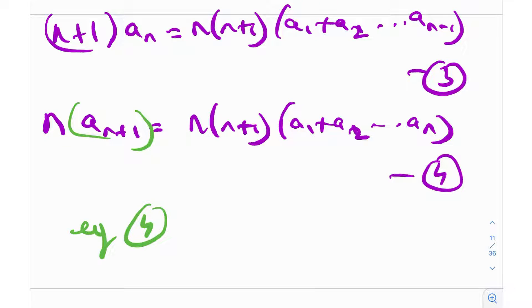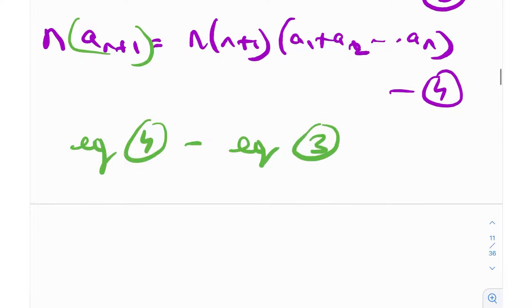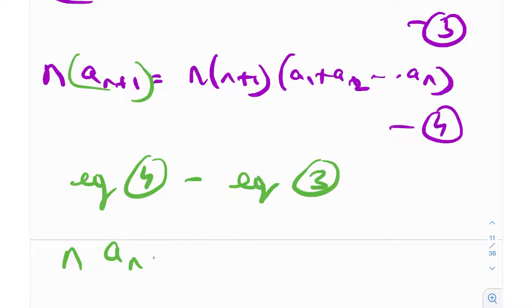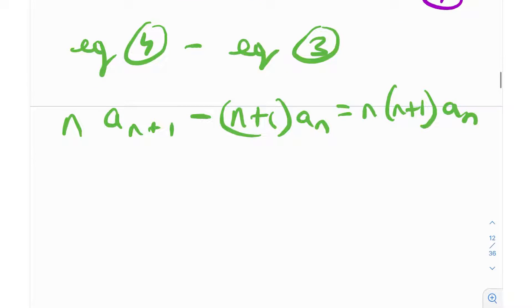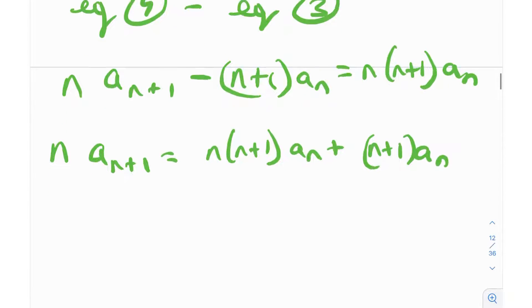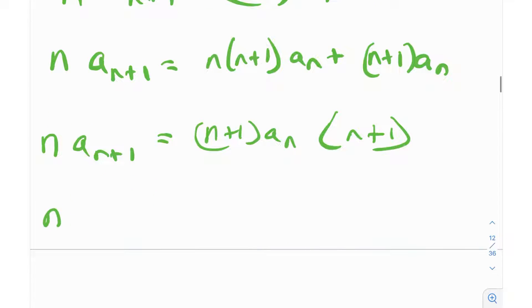I need to subtract equation 3 from equation 4. A lot of these terms get cancelled out on the right hand side. I get naₙ₊₁ - (n+1)aₙ on the left, and on the right everything gets cancelled except for the last term, which is n(n+1)aₙ. So naₙ₊₁ = n(n+1)aₙ + (n+1)aₙ. Factorizing the right hand side, I can take (n+1)aₙ common, giving naₙ₊₁ = aₙ(n+1)².